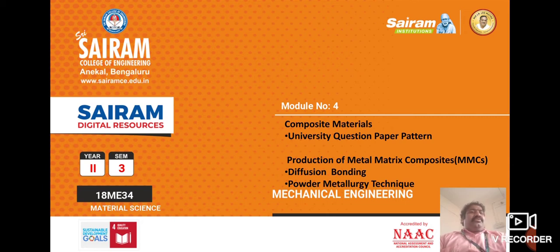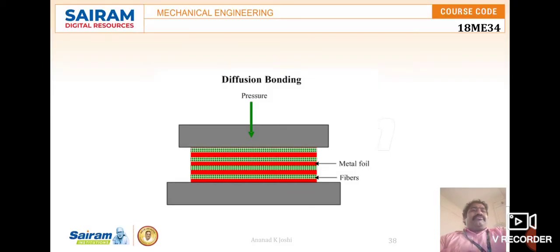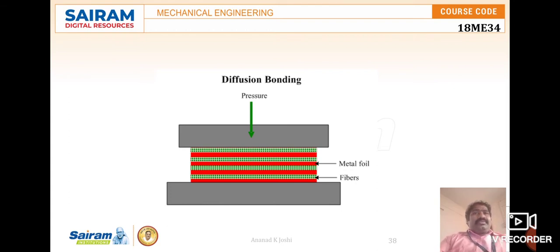We will discuss diffusion bonding and powder metallurgy techniques. Diffusion bonding is a solid-state fabrication method of MMCs. The matrix is in the form of thin foils and the reinforcement is in the form of long continuous fibers, stacked in a particular order, then pressed at elevated temperatures and pressures. This process is adopted for producing MMCs with light alloys like aluminium, magnesium, or titanium.